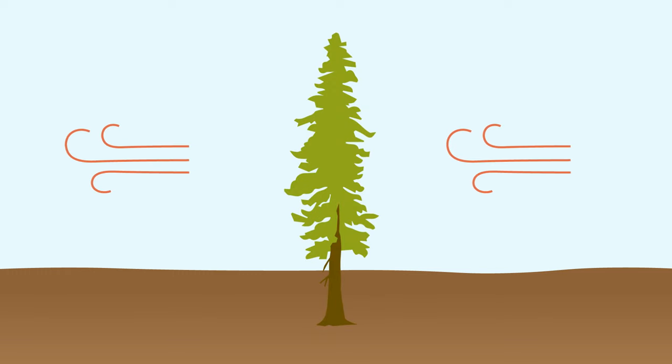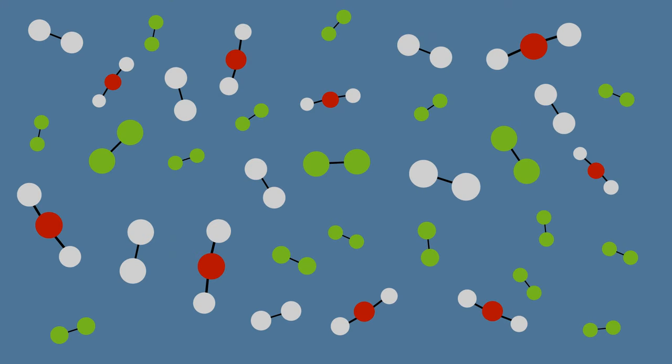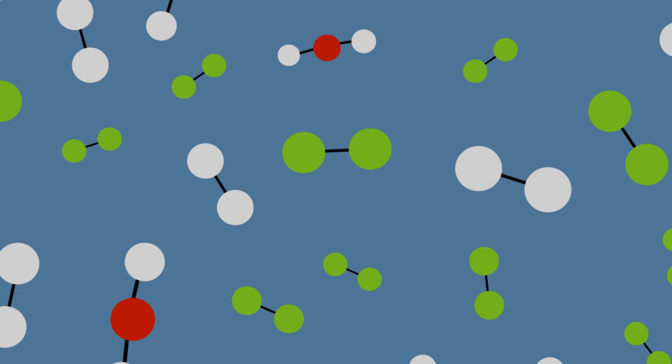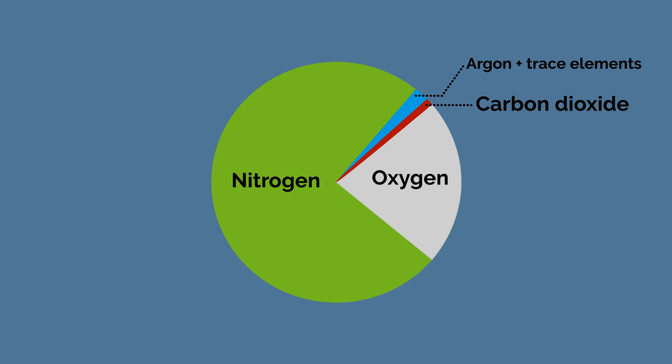The air around you seems empty, but it's not. Air is made of tiny bits called molecules. When you look closer at the molecules in our air, you'll find that it's mostly nitrogen, oxygen, and carbon dioxide.